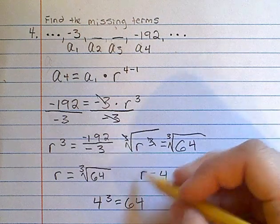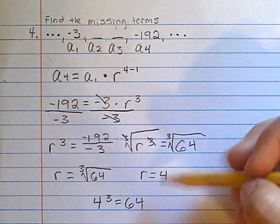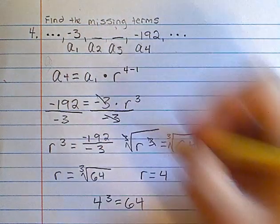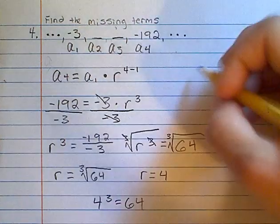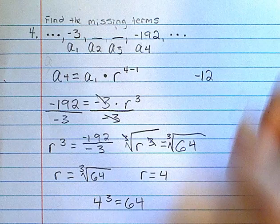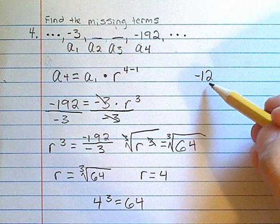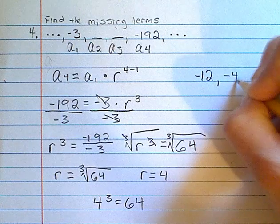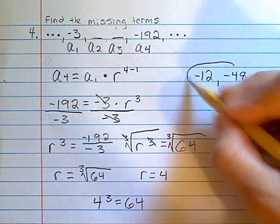Now using this ratio, we can find our missing terms. So we multiply negative 3 by 4, and a2 will equal negative 12. Multiply this negative 12 by 4 again, and we get negative 48. So these are the 2 missing terms.